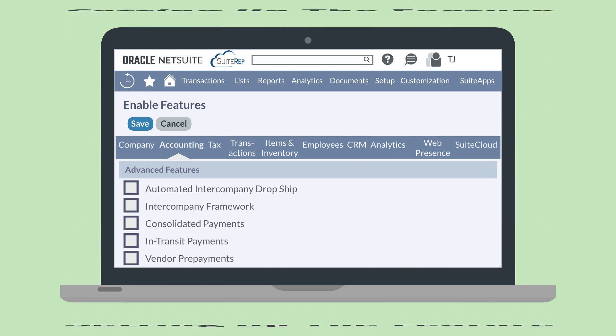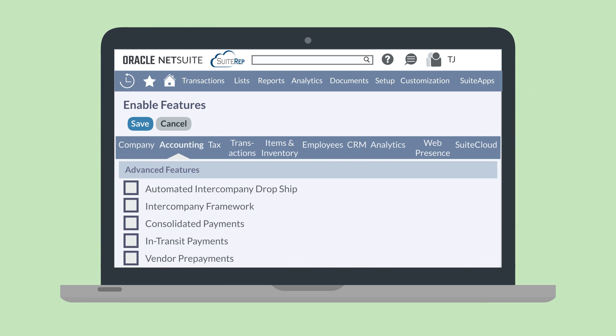How would you set up the NetSuite Automated Intercompany Dropship feature in your account? First, you would need to enable this feature, which you can do under the Advanced Features section of the Accounting tab in Enable Features.